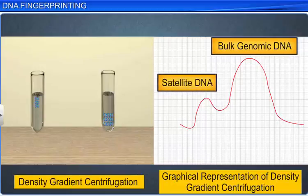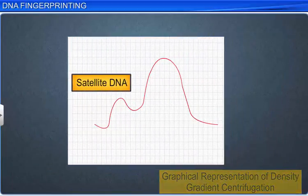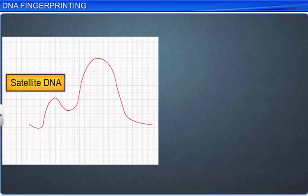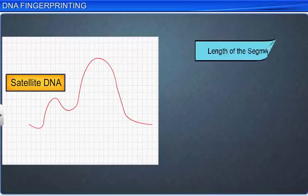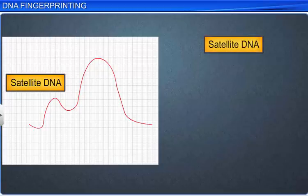Satellite DNA is highly repetitive and consists of non-coding sequences. Based on the length of the segment, base composition, and number of repetitive units, satellite DNA can be classified as mini-satellite DNA and micro-satellite DNA.